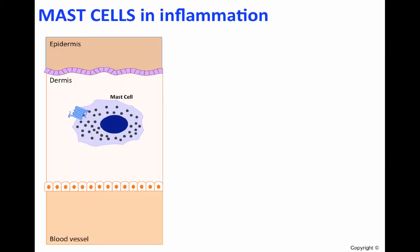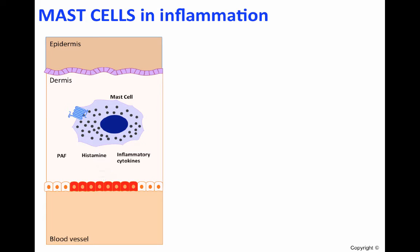Mast cells participate in inflammation. When they are activated, they will release platelet-activating factor, histamine, and other pro-inflammatory cytokines. These molecules will activate endothelial cells to increase vascular permeability. The increase in vascular permeability allows fluid from blood vessels to enter the site of infection, leading to edema.